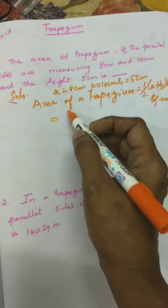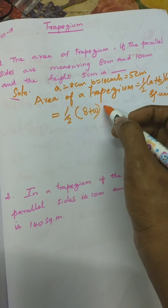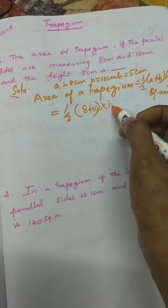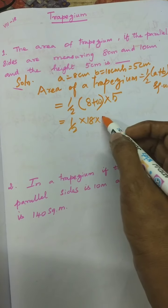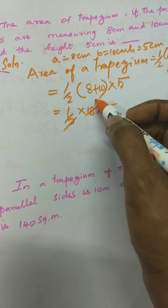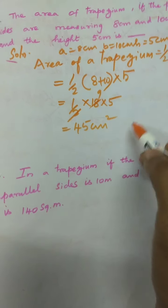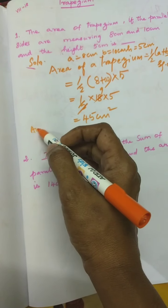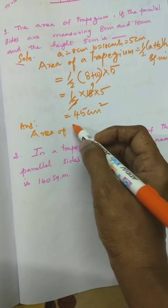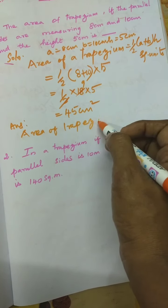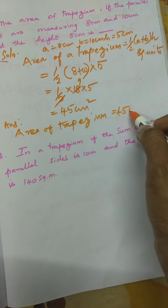Now you have to substitute. Half into 8 plus 10 into H — what is H here? 5. Now 1 by 2 into 18 into 5. You can cancel 9. Then the answer is 45 centimeter square. Area of trapezium is equal to 45 centimeter square.